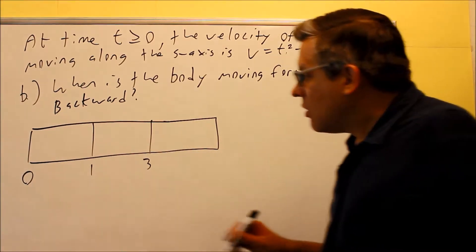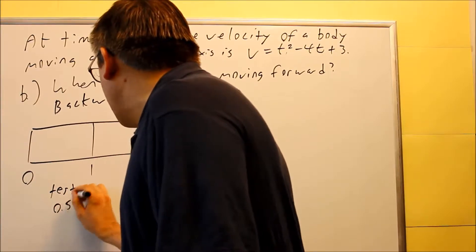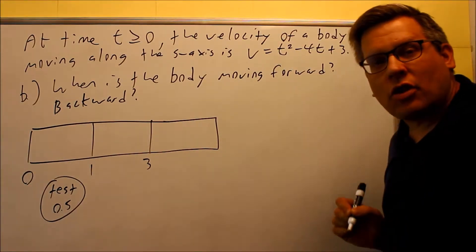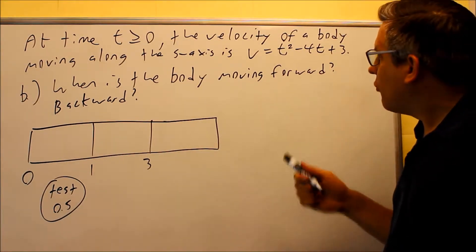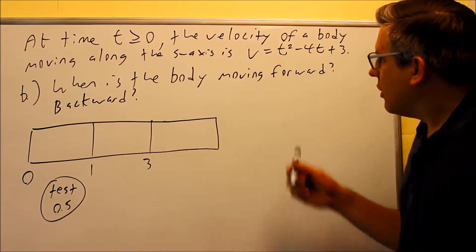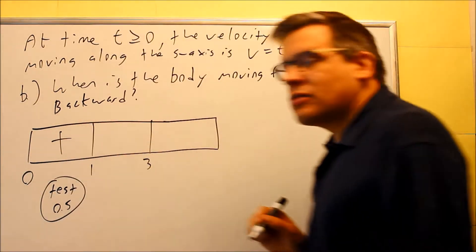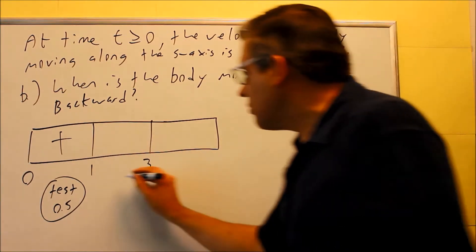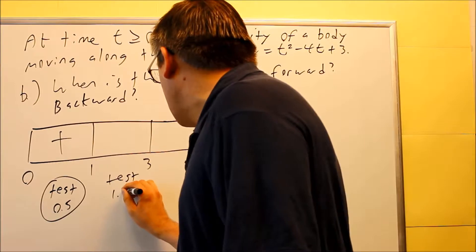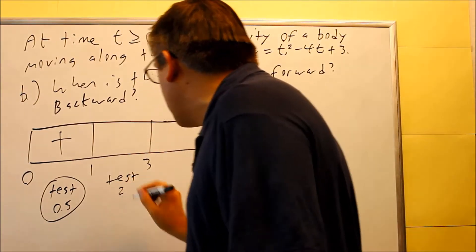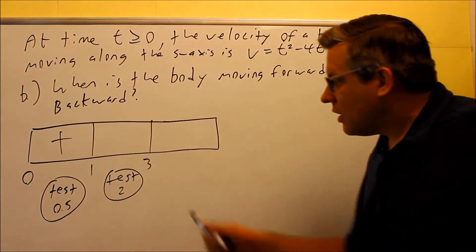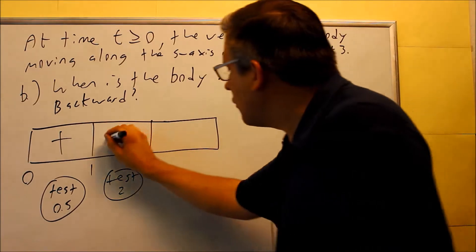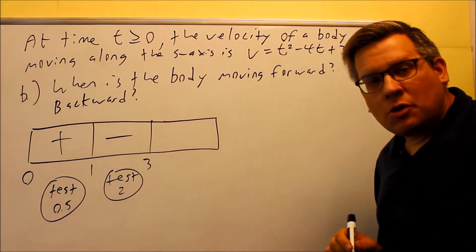If it's moving forward, you'll see a plus; if moving backwards, you'll have a minus. I'm going to test 0.5 — putting it into the original velocity function: 0.5 squared minus 4 times 0.5 plus 3. That gives a positive result, so it's moving in the positive direction between 0 and 1. Next, I pick a test point between 1 and 3. I'll use 2: 2 squared is 4, minus 8, plus 3 — that gives a negative number. So it's moving backwards between 1 and 3 seconds.